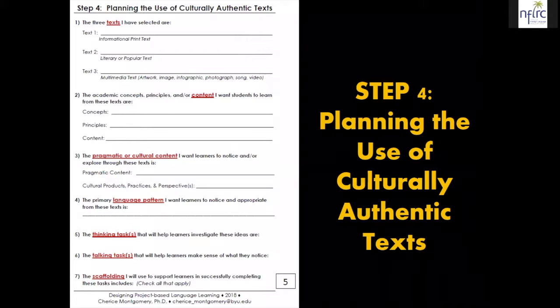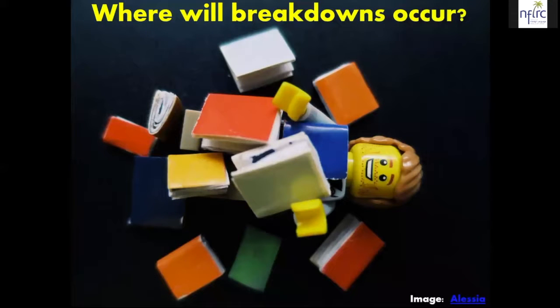The worksheet asks you to think about what thinking tasks learners could do to investigate these ideas and what talking tasks they could do. Then you're going to see a checklist of lots of different scaffolding strategies. Now that you know sort of what that next step is in terms of your task, where are we likely to see breakdowns when students engage with these kinds of texts?